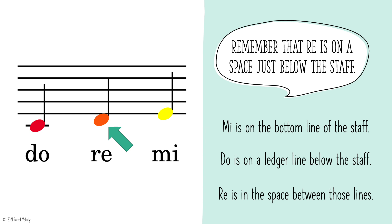Remember that Re is on a space just below the staff. Mi is on the bottom line of the staff. Do is on a ledger line below the staff. Re is in the space between those lines.